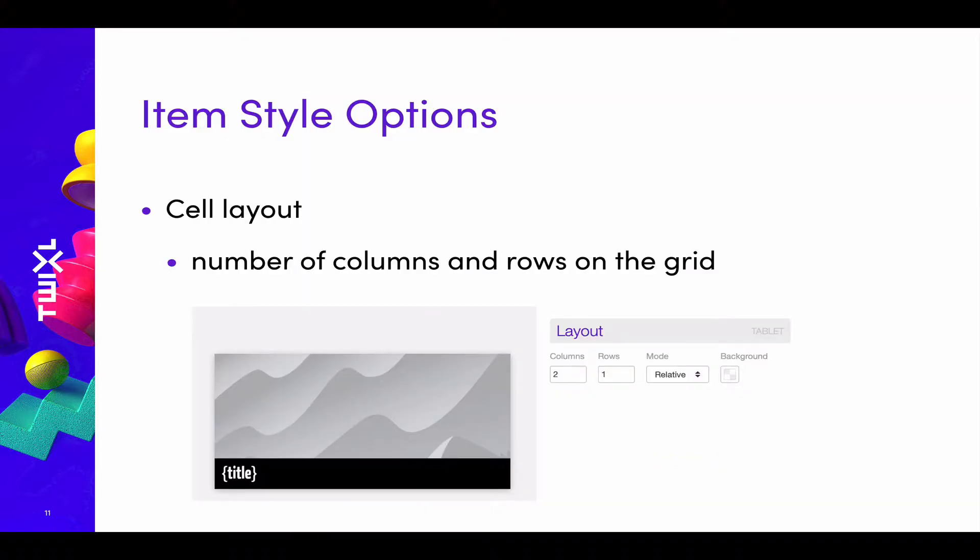Let's look at the different options to define the item style. The first and most basic one is the cell layout — the number of columns and rows that the cell will span on the grid. In this case, we have defined the cell as spanning two columns and one row, which means that in a four-column grid, it would span 50% of the width of that grid.